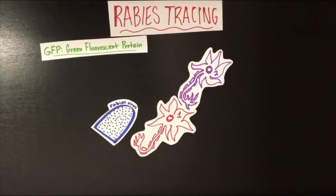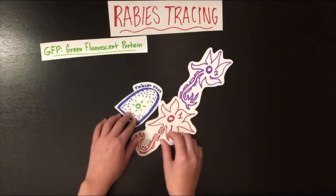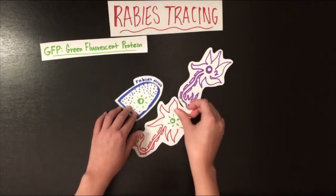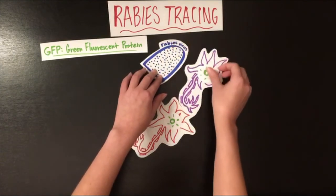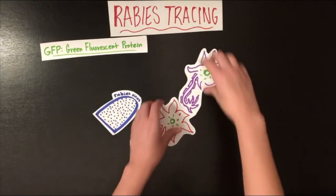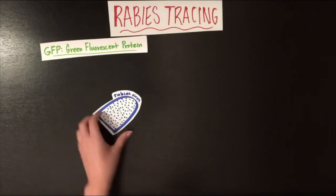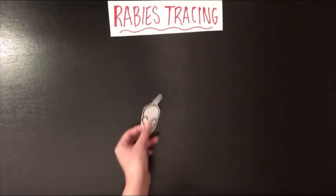In the place of the glycoprotein, the virus carries with it the gene for a fluorescent protein such as GFP, so that when the rabies virus incorporates its DNA into an infected neuron, that neuron produces the GFP and lights up green in imaging.